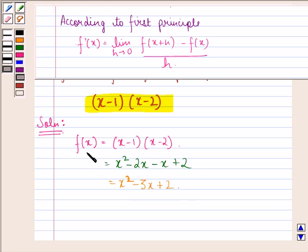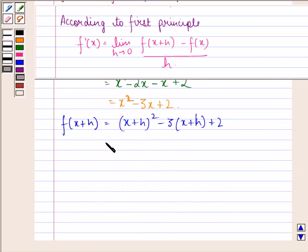Since this is function at x, so function at x+h will be (x+h)² - 3(x+h) + 2. Now, what we have done here is, we have simply replaced x by x+h. This is equal to x² + h² + 2xh - 3x - 3h + 2.